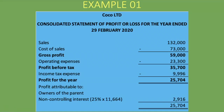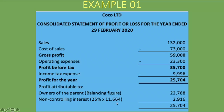The balancing figure will be the owners of the parent's share of the profits. We take the total profit of 25,704 rand minus the NCI share of 2,916 rand, which gives us the parent's share of profits: 22,788 rand. So the non-controlling interest is 2,916 rand and the amount attributable to owners of the parent is 22,788 rand, which is the balancing figure.